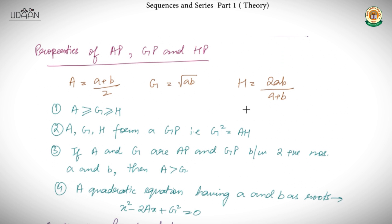We don't have a separate formula for the sum of a harmonic progression. So we don't need a separate set of formulas or concepts — whenever terms are given in HP, we take their inverses, assume them to be in AP, and solve the question. We'll now look at some properties of AP, GP, and HP, as some properties of their means are common.